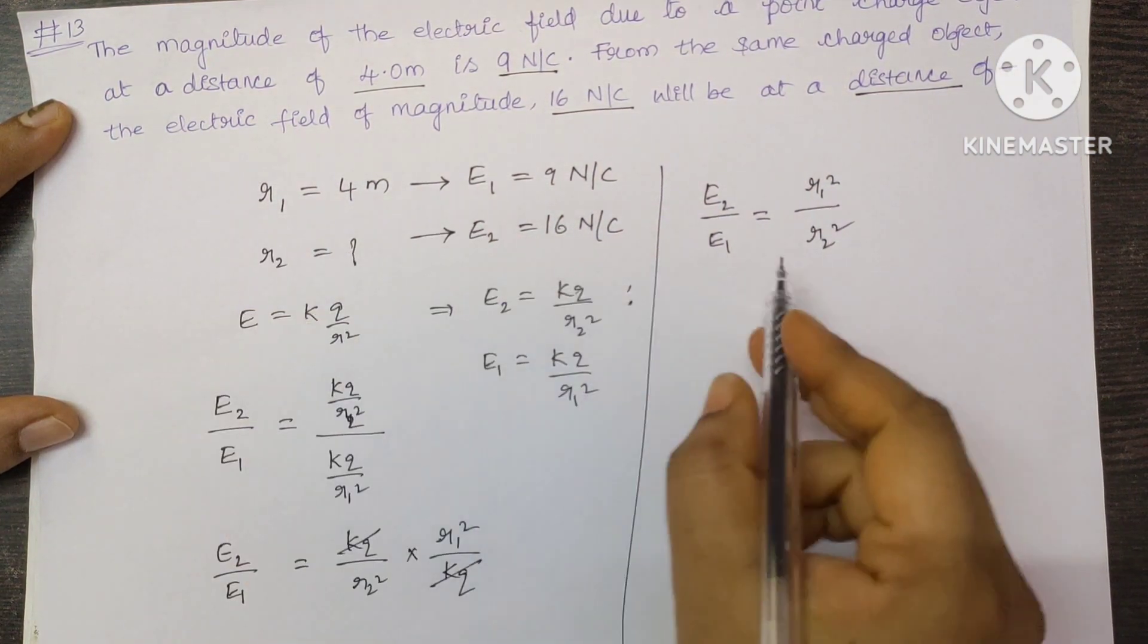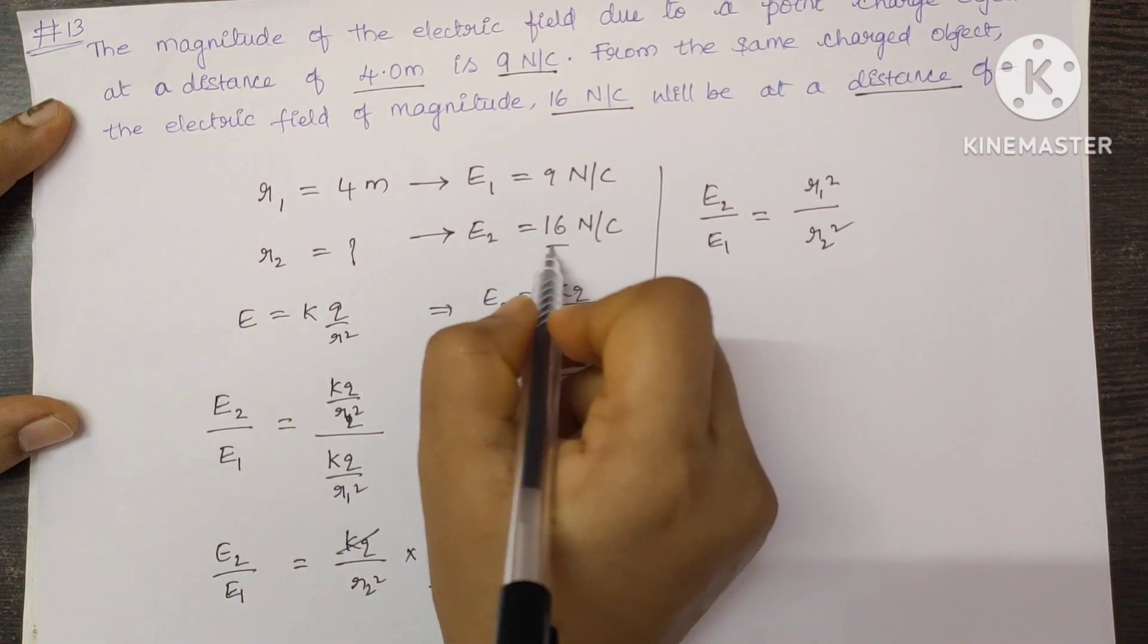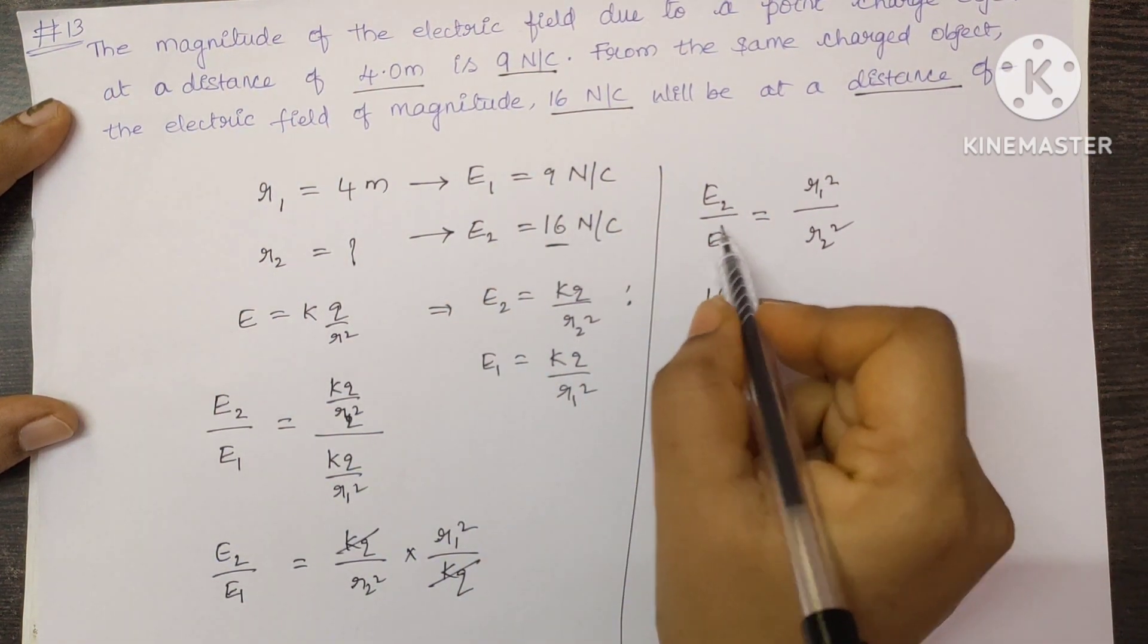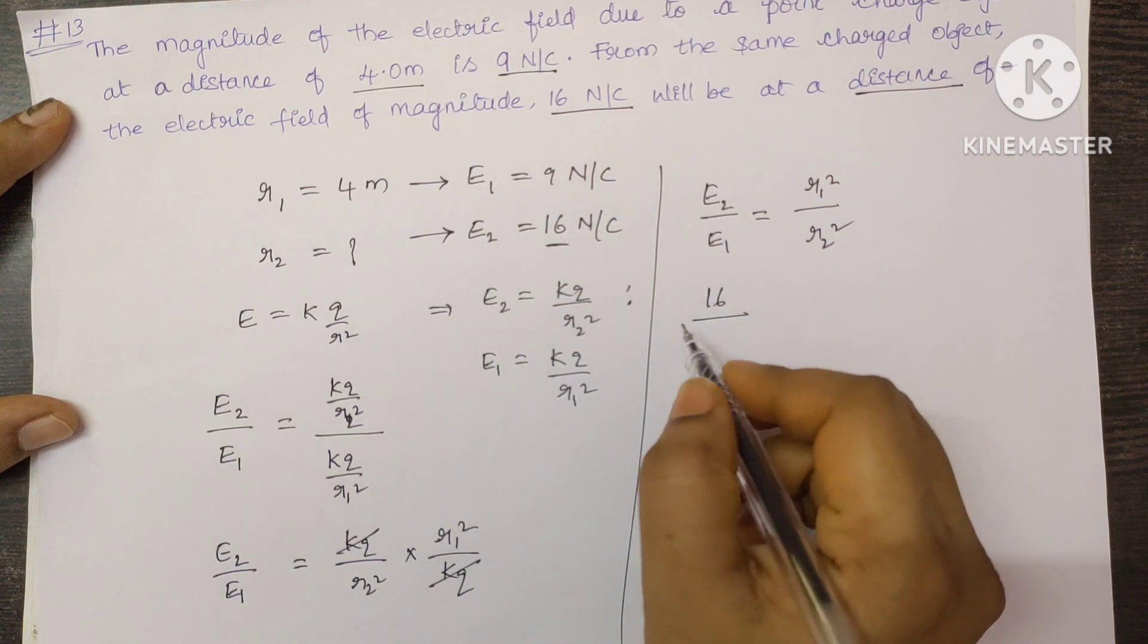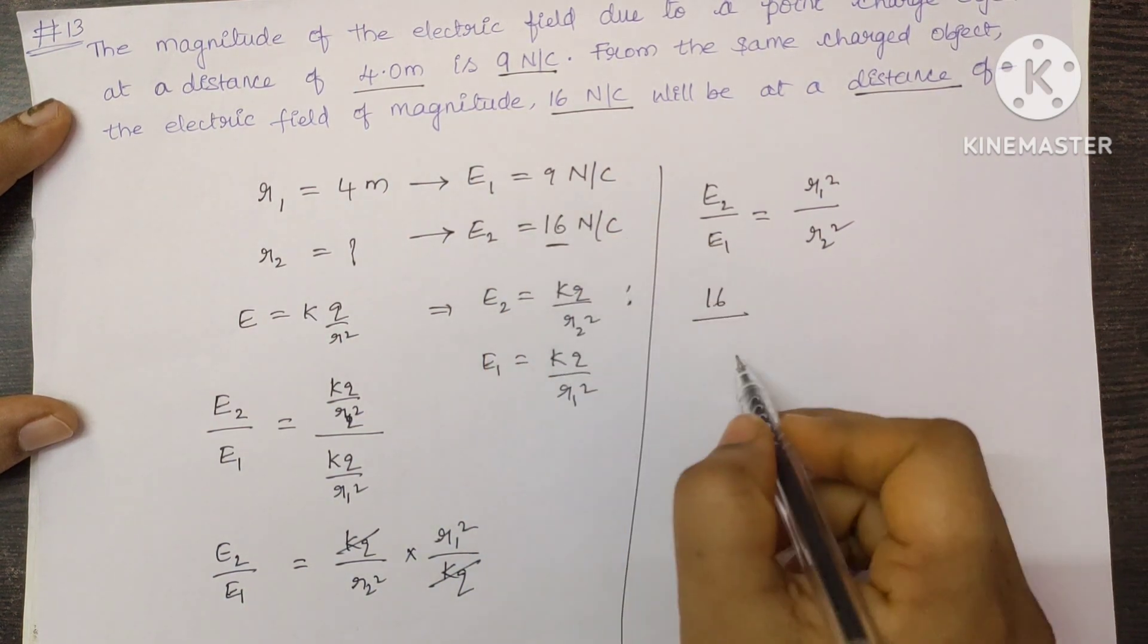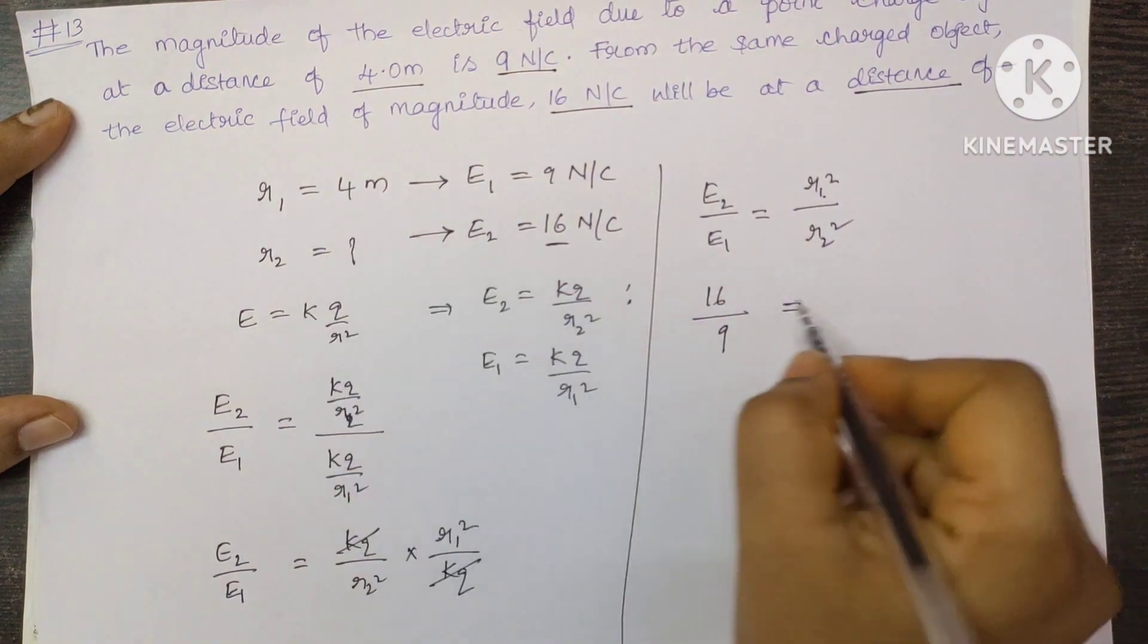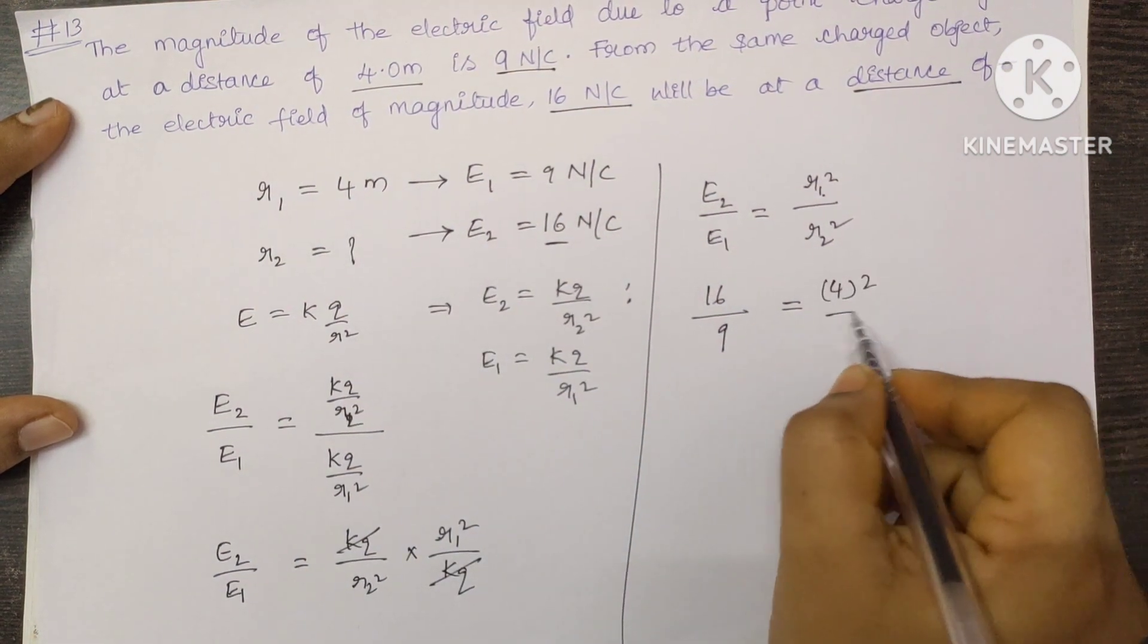Now substitute the given values. E2 is 16 and E1 is 9, which is equal to R1 value is 4, so 4 whole square, and we have to find out R2.